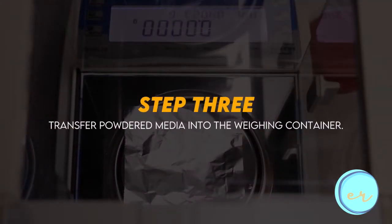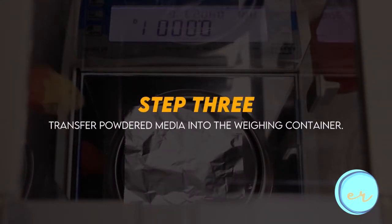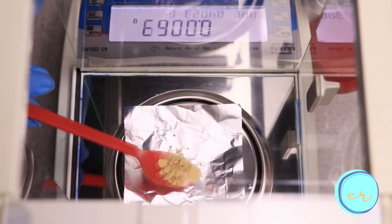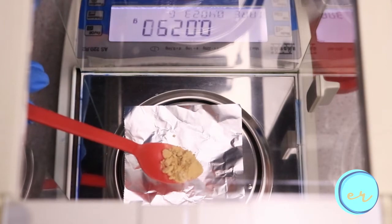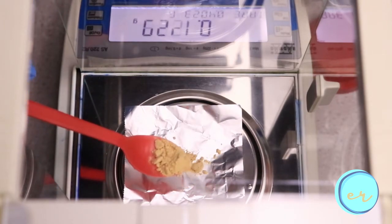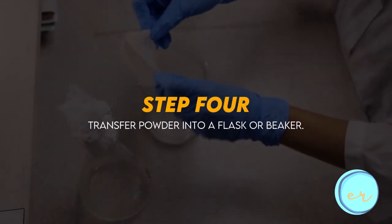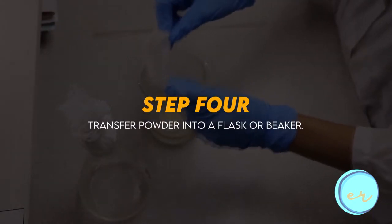When transferring the powdered medium into a container for weighing, use a dry spatula. Transfer just enough as you have computed. Avoid unnecessary exposure of the medium to the atmosphere because it is hygroscopic in nature. Then carefully transfer this weighed powder into the flask.